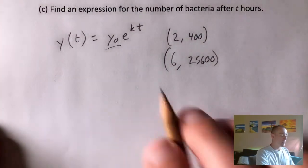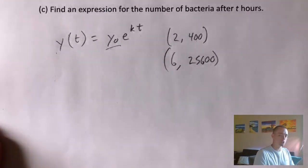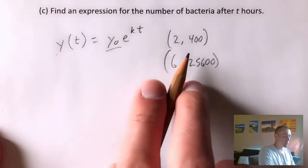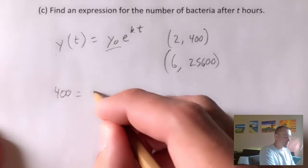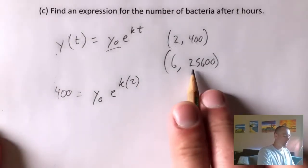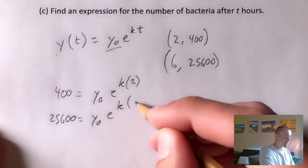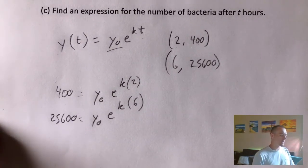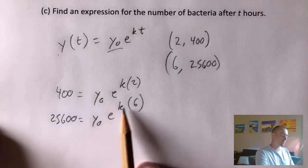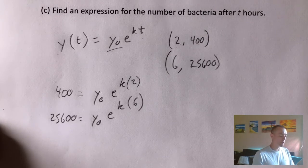Plugging in our input for T and our output for Y of T gives us: 400 equals Y sub zero times E to the K times two, and 25,600 equals Y sub zero times E to the K times six. This has created a system of equations — we have two unknowns, Y sub zero and K, and two equations, so we should be able to solve for both.